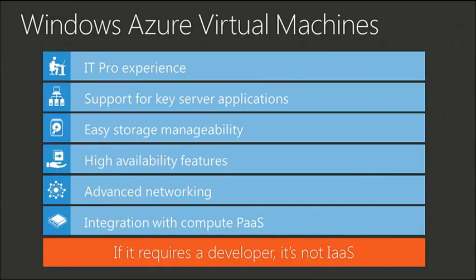High-availability features were crucial — if you're going to appeal to enterprises, you need apps that are scale-out as well as highly available in the face of hardware failures. Advanced networking and connection back to on-premises was another goal, with richer connectivity than Windows Azure Connect's point-to-point server-to-server model. And a key differentiator for us: integrating the two worlds — virtual machines and PaaS — not having them sit side by side, but being one world connected together.